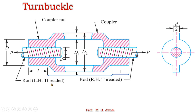We will see in detail now. This is the figure of a turnbuckle which consists of a number of parts. The first part is the rod — rod 1 and rod 2. Both the rods are having different hands of thread: one rod is having left hand thread and the other is having right hand thread. The second part is the coupler nut, which is there on the left hand side as well as on the right hand side. At the center there is a hollow portion called the coupler. So the three major parts are: rod, coupler, and coupler nut.